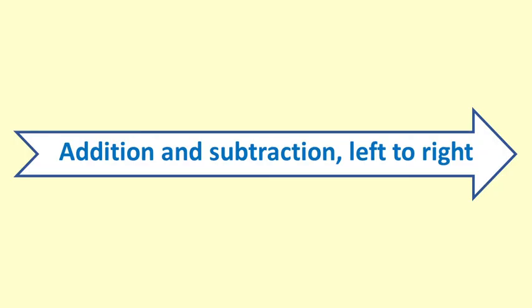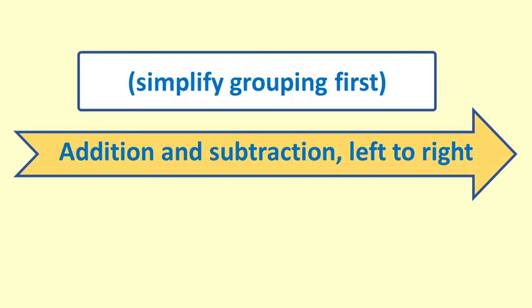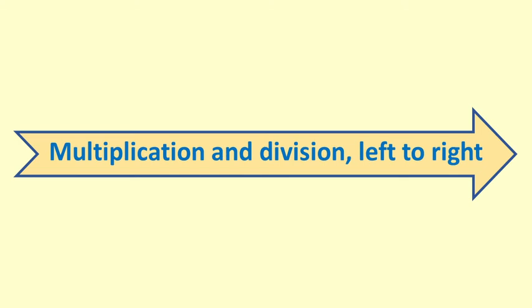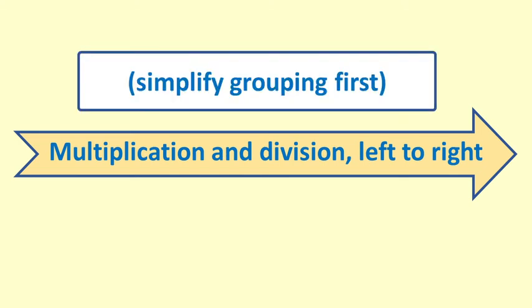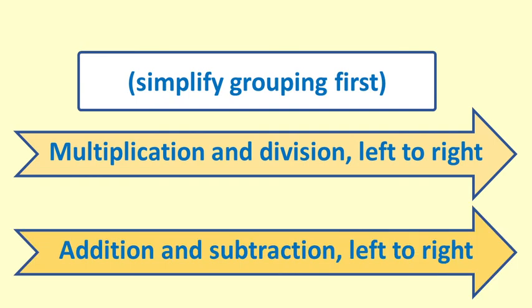In that video we explain that addition and subtraction are performed from left to right and that you simplify expressions inside grouping symbols such as parentheses first. Multiplication and division are also performed from left to right and they happen after the grouping and before the addition and subtraction. In this video we will concentrate on multiplication and division.